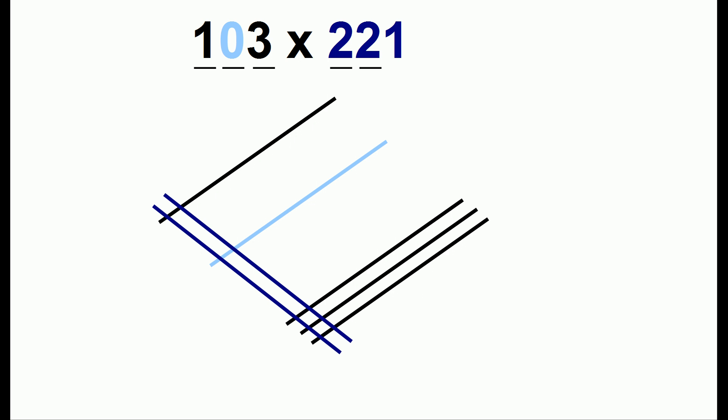You can even use this trick when a number includes zero. But one thing, when you draw this line, you should still draw the line, but put it in a different color or a different marking. And the trick will be that we don't count any of the dots for that line.